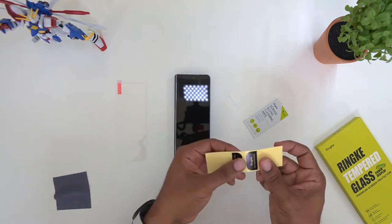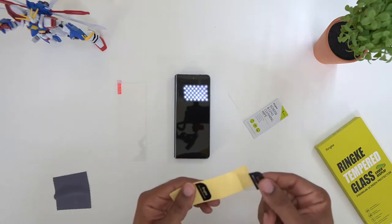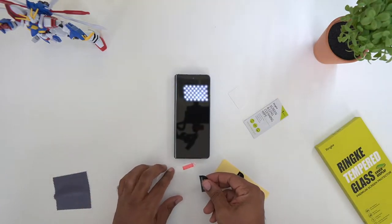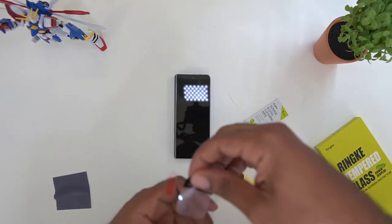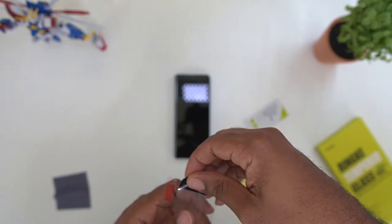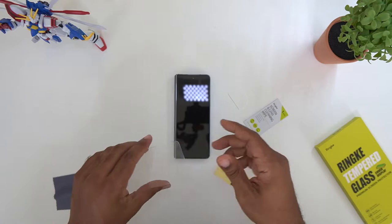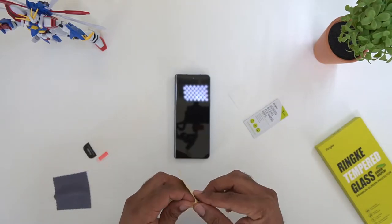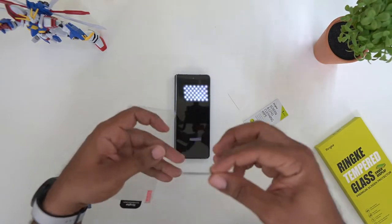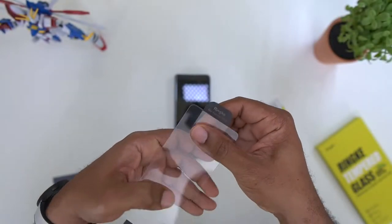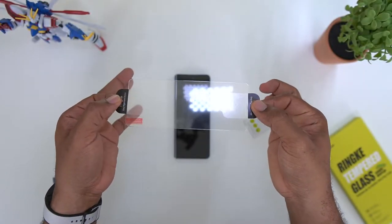Let's go ahead and first things first, we want to get these screen applicator stickers on this screen. Basically, you're just going to line these up like so. Once you get it where you want it, just put it in place. Do the same with the bottom and put it in place.